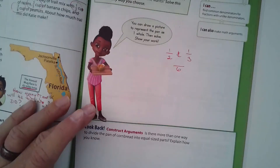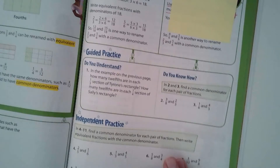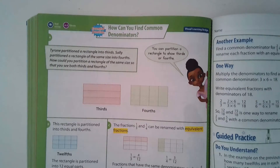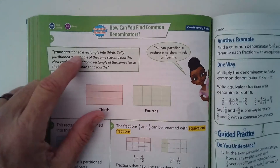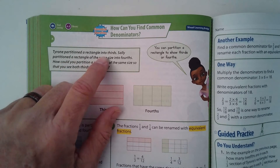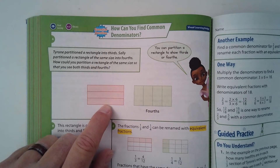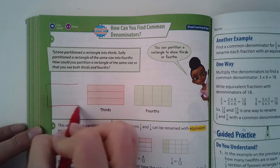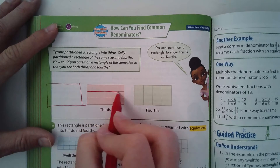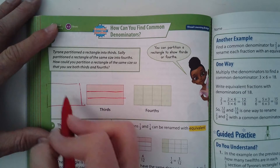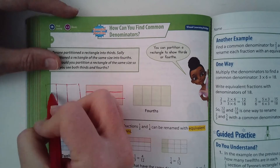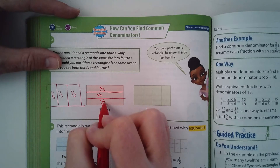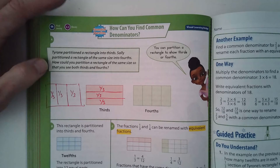Let's turn to page 274. This is a good example. Tyrone partitioned — that means he divided up — a rectangle into thirds. Now I'm going to redraw this rectangle just to show you something. They went in this direction to divide it into thirds, but you could also do it vertically. Either way, this is one third, this is one third, and this is one third.